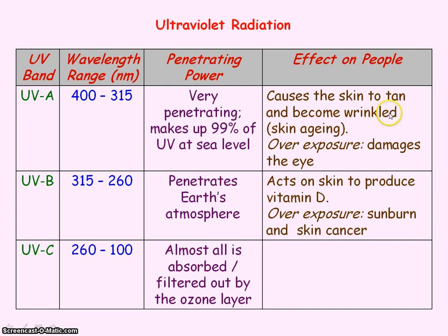UVA causes the skin to tan and also become wrinkled. UVB also penetrates the Earth's atmosphere, and it's beneficial in that it acts on the skin to produce vitamin D, which we need. However, if we have too much UVB we're in danger of sunburn and skin cancer.